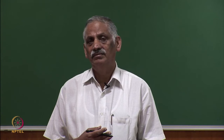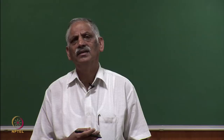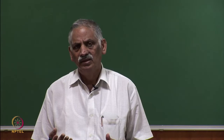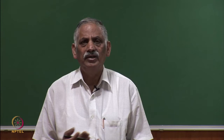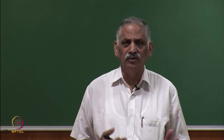Another major reason is distributed generation using renewable energy sources, which has increased power quality problems. For example, solar PV energy is now very cheap — around 2 rupees per unit in India and even 1 rupee per unit in some countries. Where the utility charges 10 rupees per unit, you cannot deny the technology of generating electricity from solar energy.